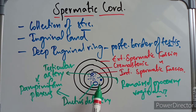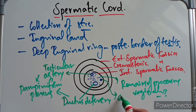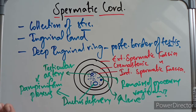Lateral to the ductus deferens we have the genital branch of the genitofemoral nerve. So that covers the transverse section of the spermatic cord. Now coming to the constituents or contents of the spermatic cord.